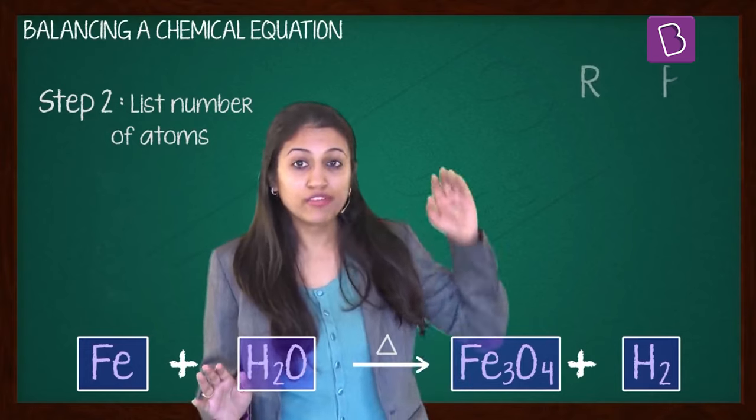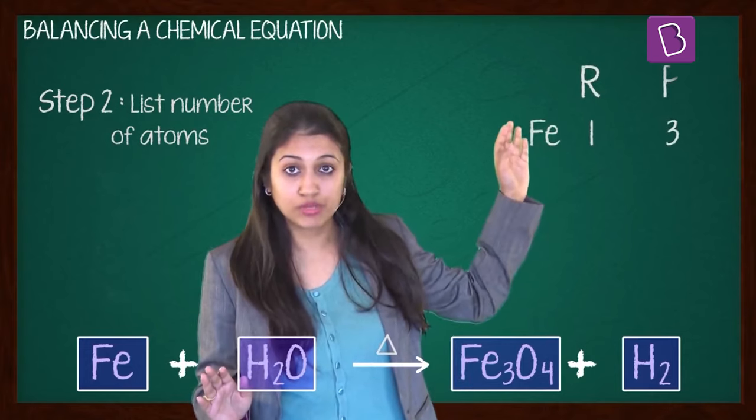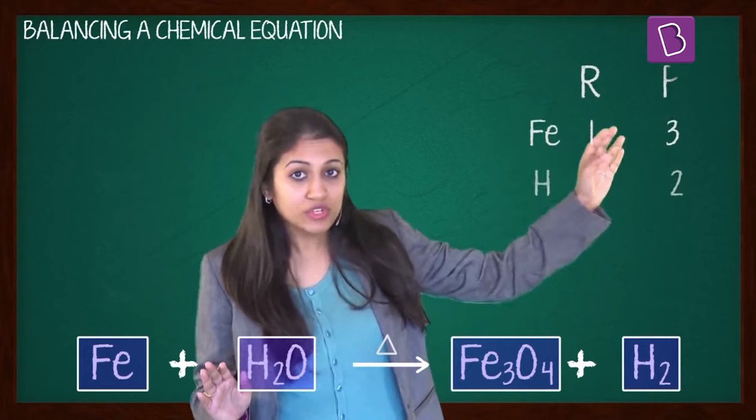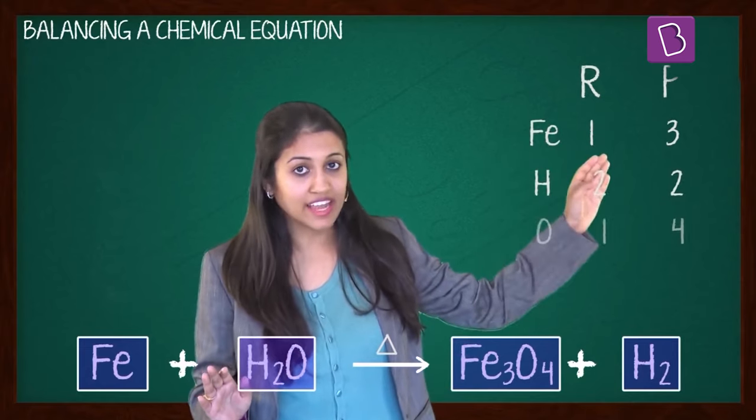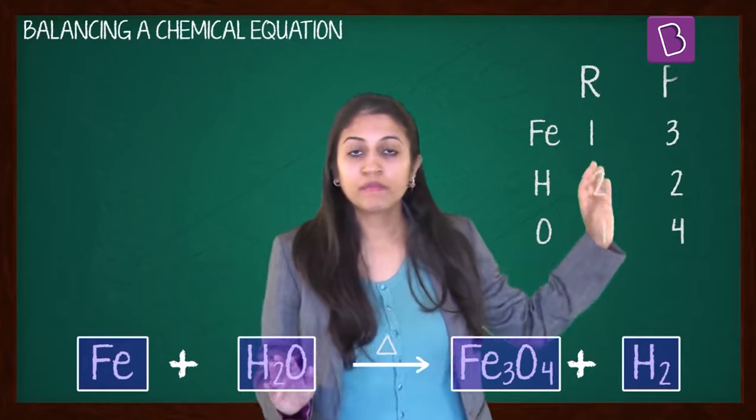Step number 2 is to list the number of atoms of different elements present in the unbalanced equation. For Fe, I have 1 in the reactant, 3 in the product. For hydrogen, I have 2 in the reactant, 2 in the product. For oxygen, I have 1 in the reactant and 4 in the product.